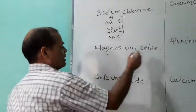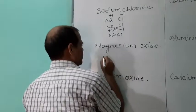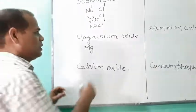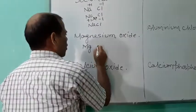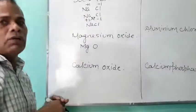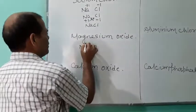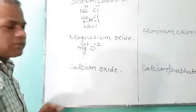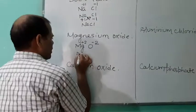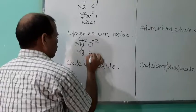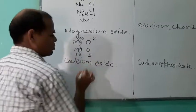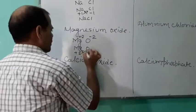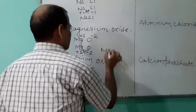Similarly, magnesium oxide. The symbol of magnesium is Mg, and oxygen is O. Mg has valency plus two; oxygen has minus two. Write Mg, O, plus two, minus two, and cross each other. The formula of magnesium oxide is MgO.